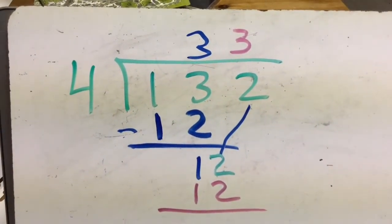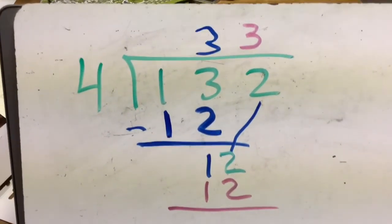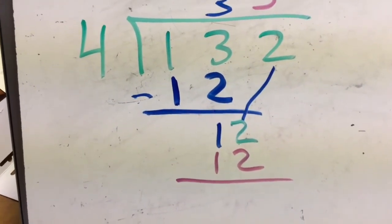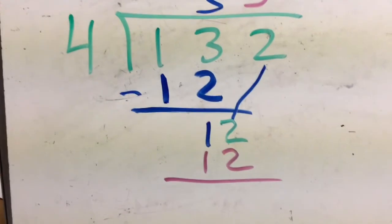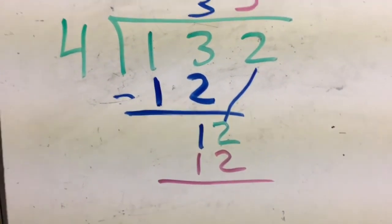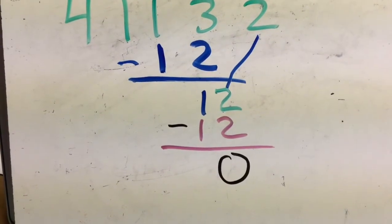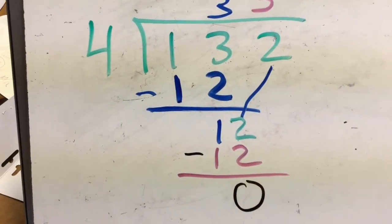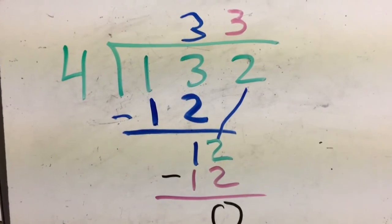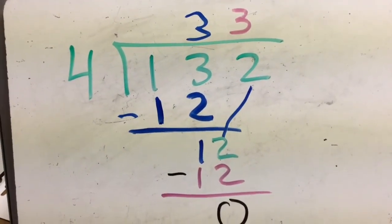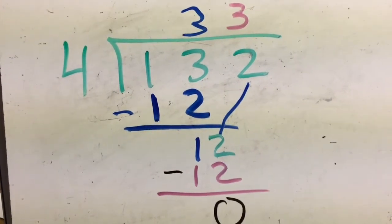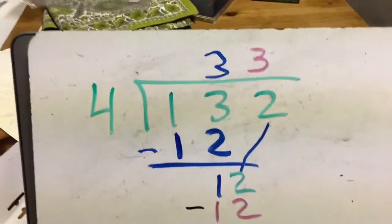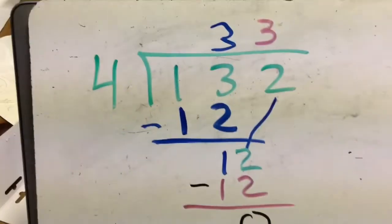I want that three — three times four gets me 12. So I put the number down and subtract to see if there's a remainder. When I subtract I get zero, which means there's nothing left over. The fours go evenly into 132 with nothing left over. My answer is 33. How many groups of four are in 132? Thirty-three. Multiply, subtract, put the number down, drag the next number down — multiply, subtract, and you're done.